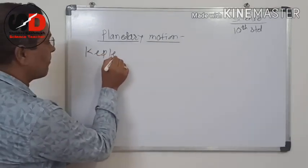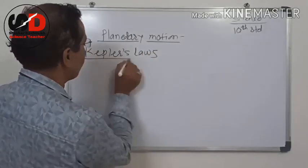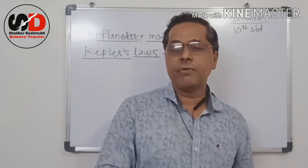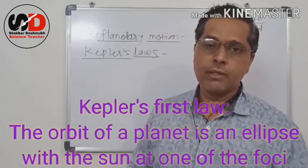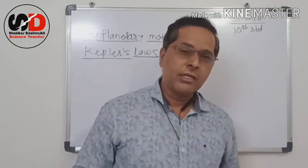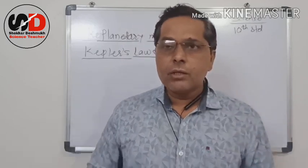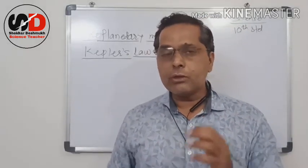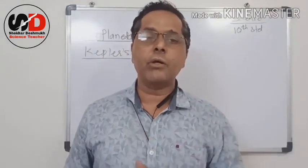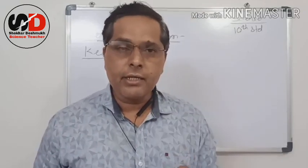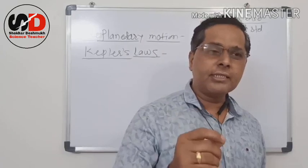Let us see Kepler's laws of planetary motion one by one. The first law: the orbit of a planet is an ellipse with the Sun at one of its foci. Before Kepler, according to the Copernican model, the Sun is at the center of the universe and all the planets revolve around it in a circular orbit. But Kepler told that the planets revolve around the Sun in an elliptical orbit — that means the orbit of the planet is an ellipse with the Sun at one of its foci.